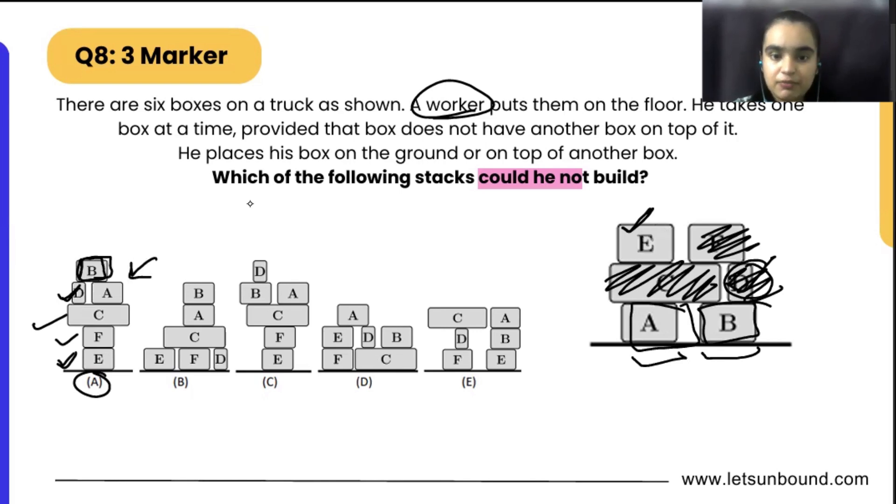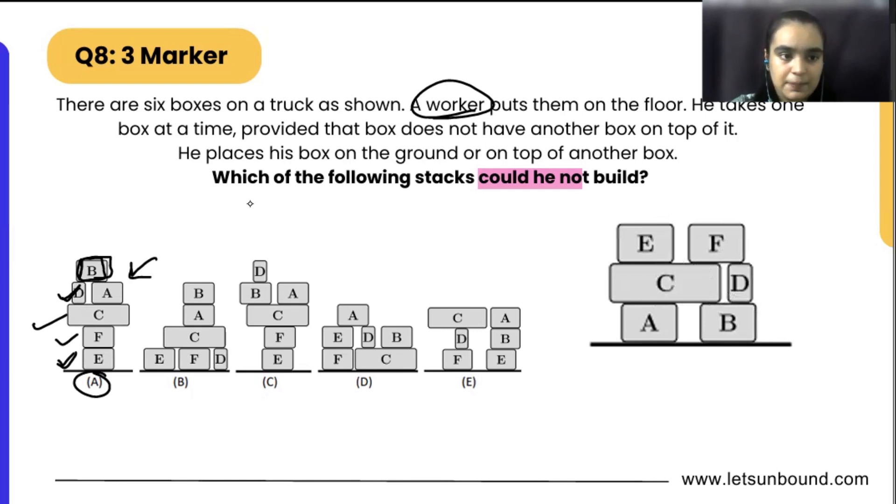This is done. And then C also, because just above C there are no other bricks, so we can arrange C as well. And then A and B, because they are on the floor empty, nothing is there just above those two bricks, so we can arrange them.